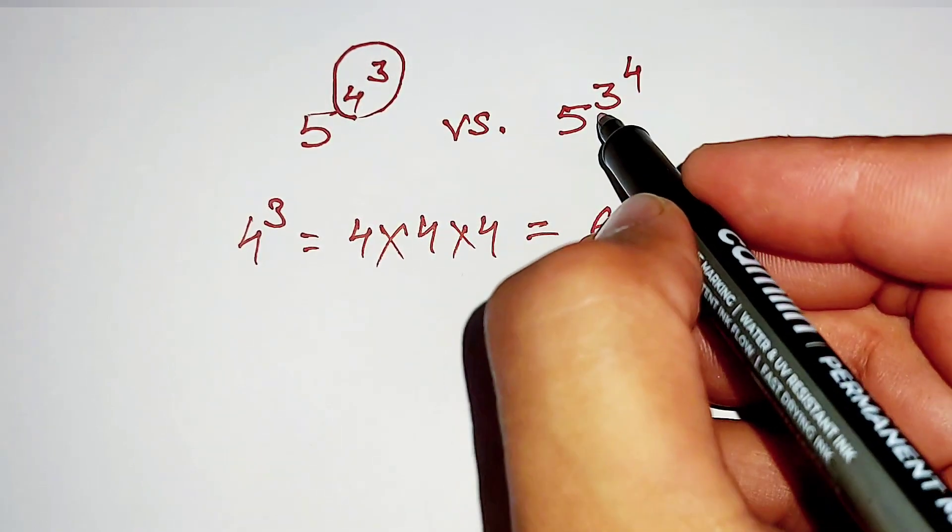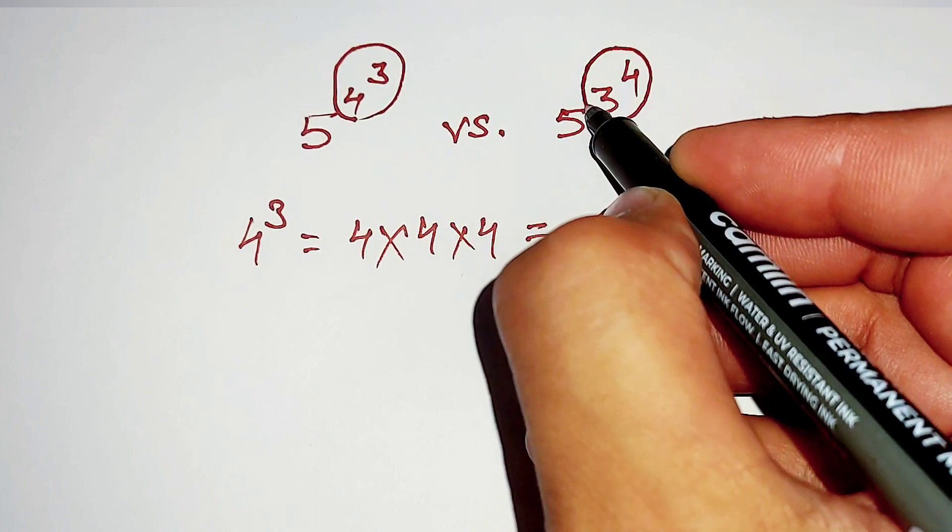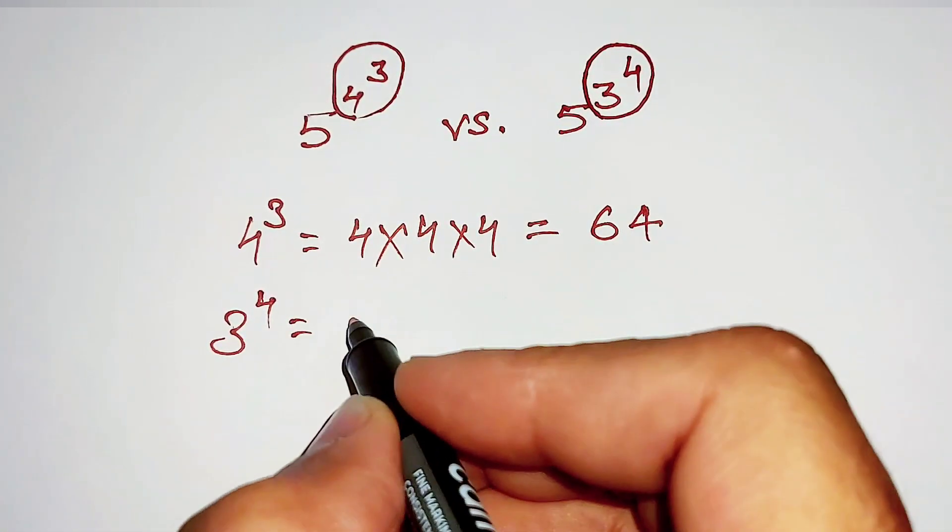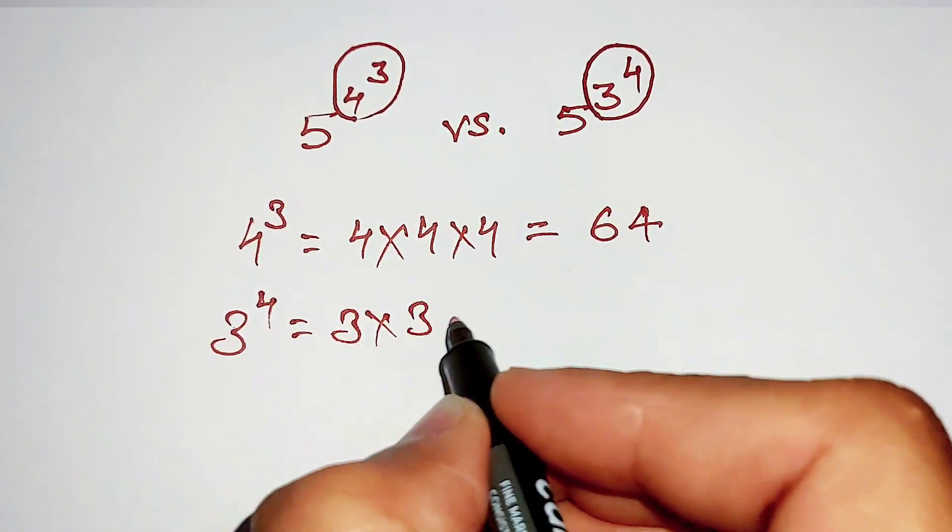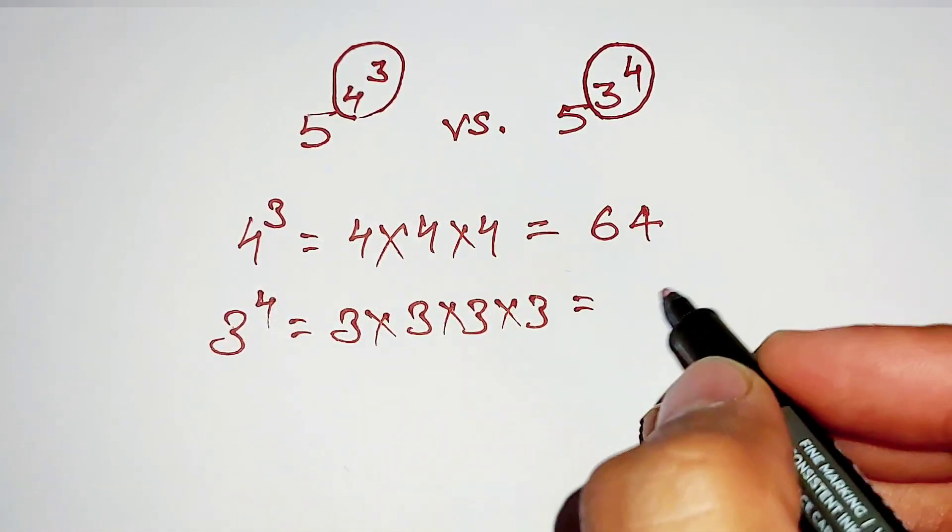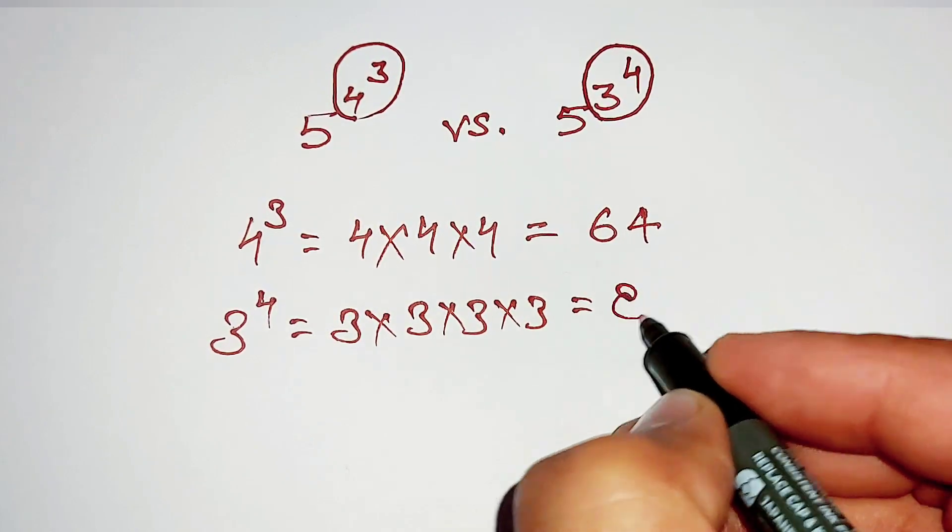Again we will solve this part of this expression, 3 power 4, which is equal to 3 multiply 3 multiply 3 multiply 3. This is equal to 81.